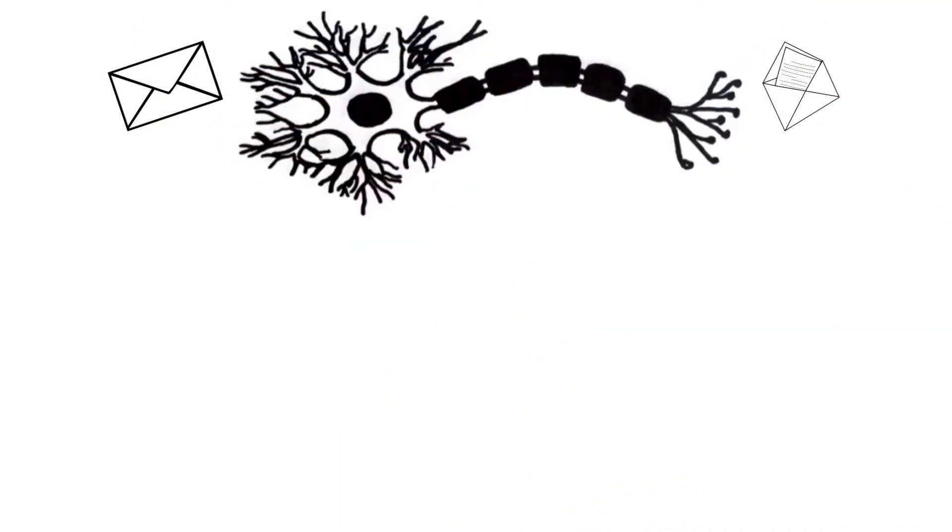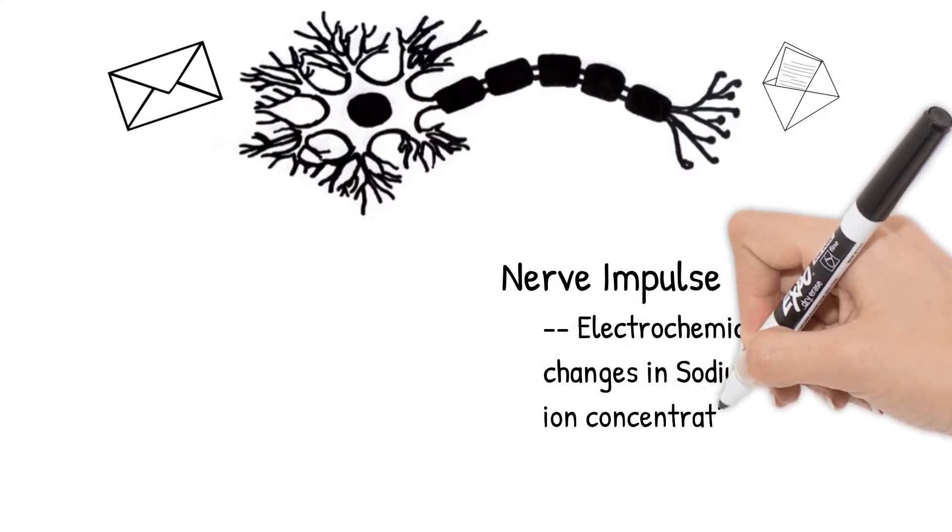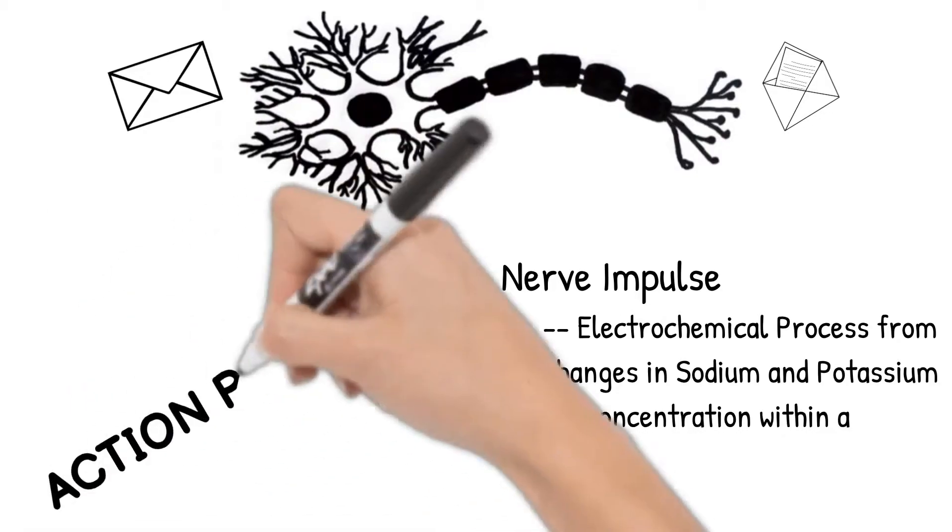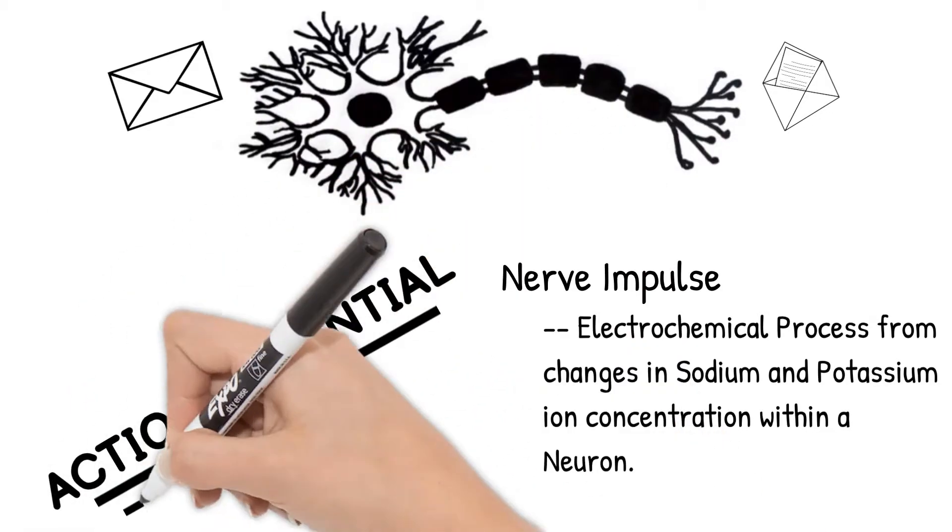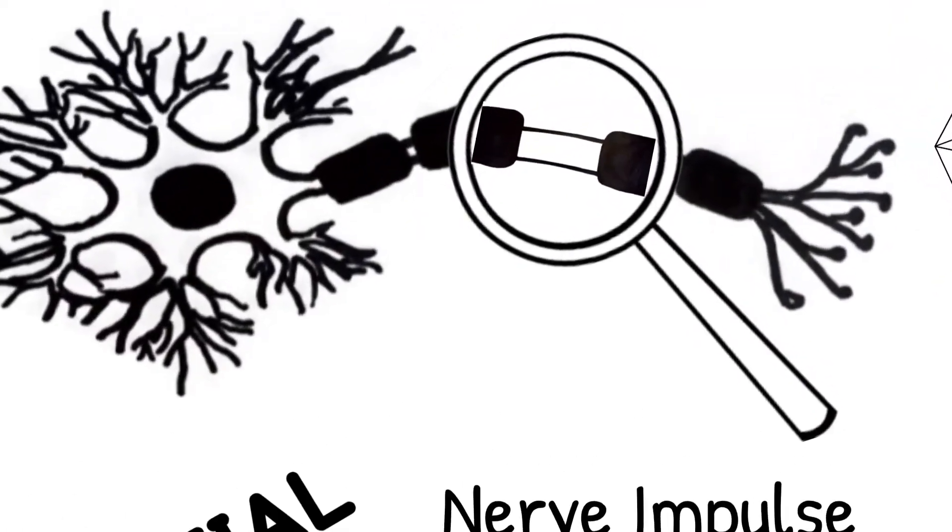The message travels as an impulse. A nerve impulse is actually an electrochemical process that happens because of changes in amounts of sodium and potassium ions inside and outside the neuron. This is also called an action potential. I'm going to zoom in a bit and look just at a small section of the axon while we talk about what happens during an action potential.